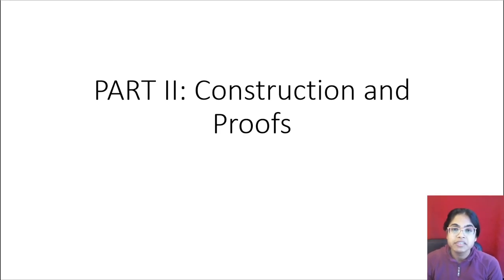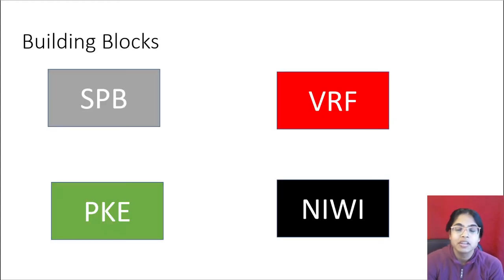Now that we have talked about ring signatures and their security properties in general, we can talk about our specific construction and proofs. We'll start with the building blocks. There are four building blocks for our construction. The first one is somewhere perfectly binding hashing or SPB. Two, public key encryption or PKE. Three, verifiable random function or VRF. And four, non-interactive witness indistinguishable proof or NIWI. I point out here that SPB, PKE, and NIWI come from a template of a ring signature scheme that we followed from Bacchus et al. from EuroCrypt 19. Our novelty is the use of the VRF to get that threshold with inter-signer anonymity and led to us having to use different proof techniques.